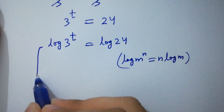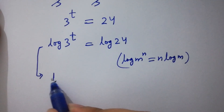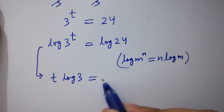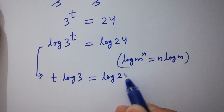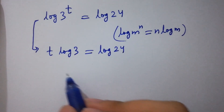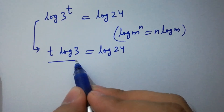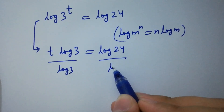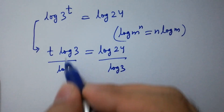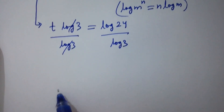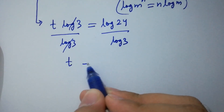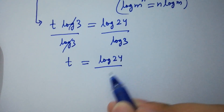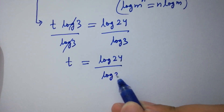Then it will be t log 3 equal to log 24. Dividing both sides by log 3, log 3 and log 3 cancel. We have t equal to log 24 over log 3.